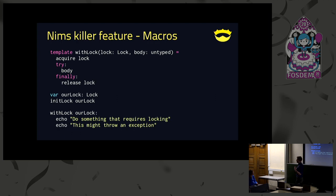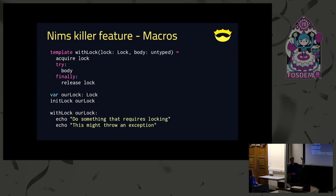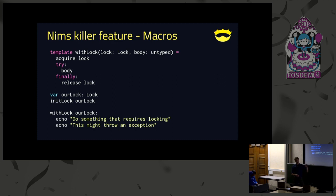With metaprogramming we can really optimize our code — take in types, do certain things at compile time, and spit out code that works better than what we gave it. We can also create nice-looking code that we then optimize into fast-running code. For example, we have a with-lock template in the standard library. You give it a block and it will do the try-finally stuff for you. Everyone who's worked with multi-threading knows you should do this, but you probably don't do it everywhere. With metaprogramming you can easily create templates to do all that boring stuff automatically.